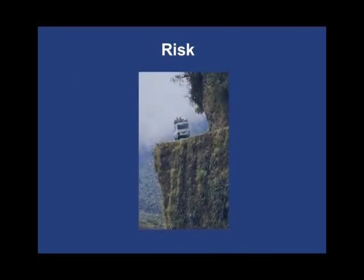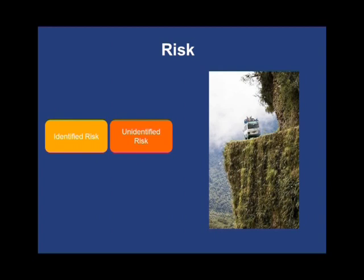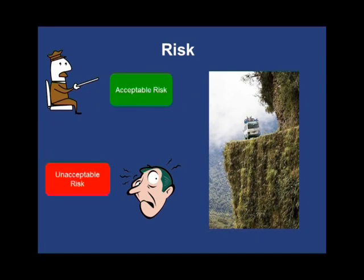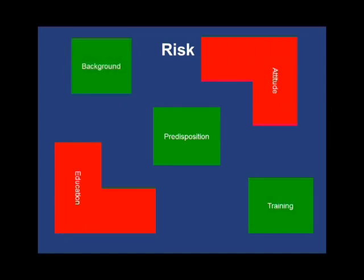Remember the discussion of margins earlier? Remember the picture of the bus driving on the mountain road? What kind of risks are associated with that? What are the identified and unidentified risks? Do you think the driver could be taking identified and acceptable risks that the passengers are unaware of? How do you decide whether a risk is acceptable or not? Begin by quantifying the risks. A risk that might not be acceptable to you might be perfectly acceptable to someone else. The primary elements that determine acceptability are education, predisposition, attitude, training, and background — and these vary from person to person.